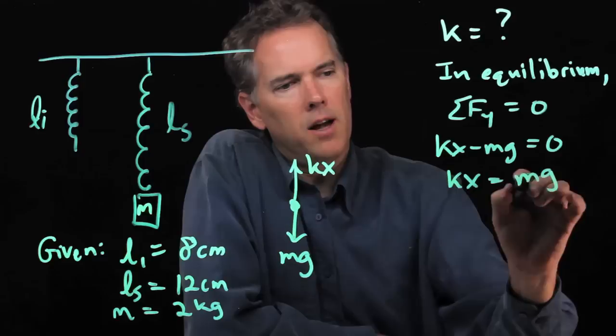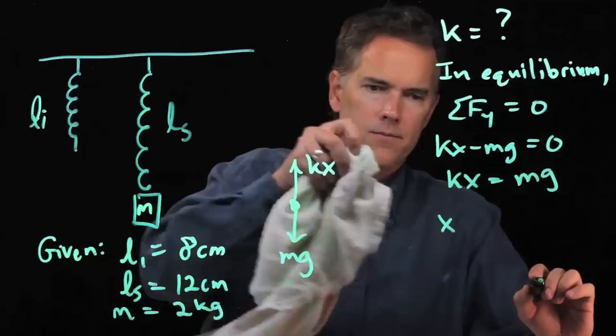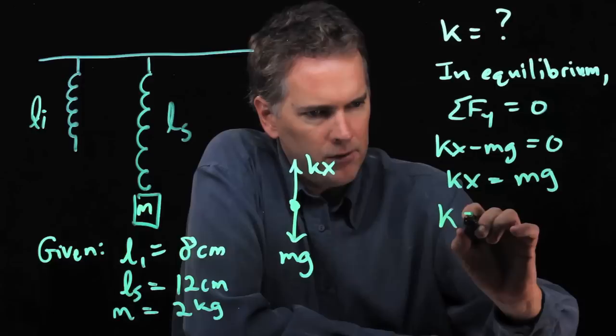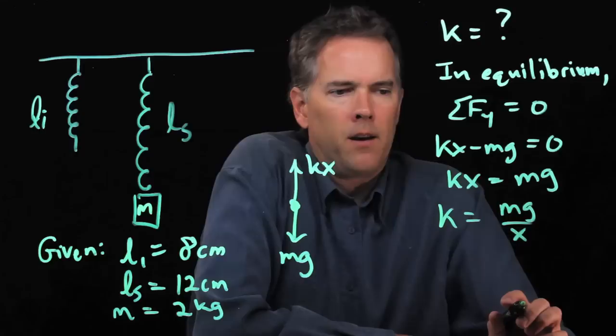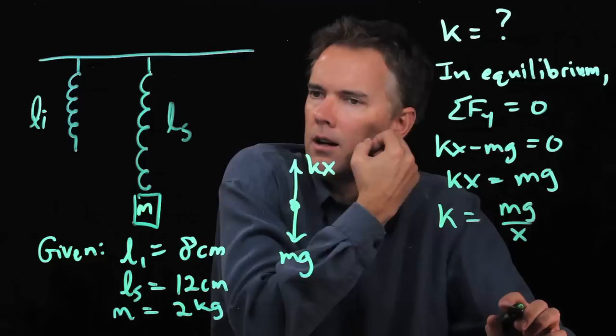Now we can solve this for K. Kx equals Mg. If I divide by x, I get K is equal to Mg over x.